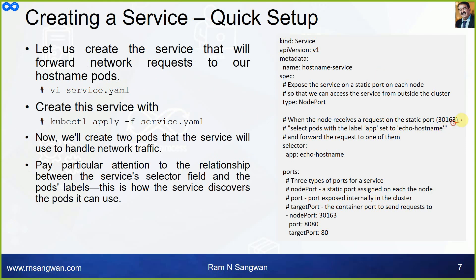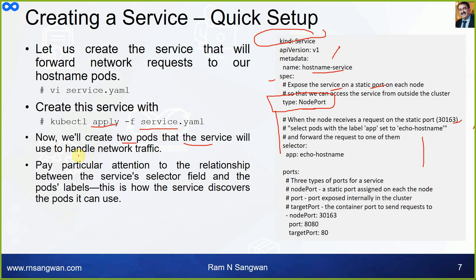We create a service YAML file: `vi service.yml`. The kind is Service. We are creating a service — version, metadata: hostname-service. In the specification, we expose the service on a static port on each node; type is NodePort. Apply this with `kubectl apply -f service.yml`. We will then create two pods that the service will use to handle network traffic — the selector is 'echo-hostname', so we need to have the same selector.